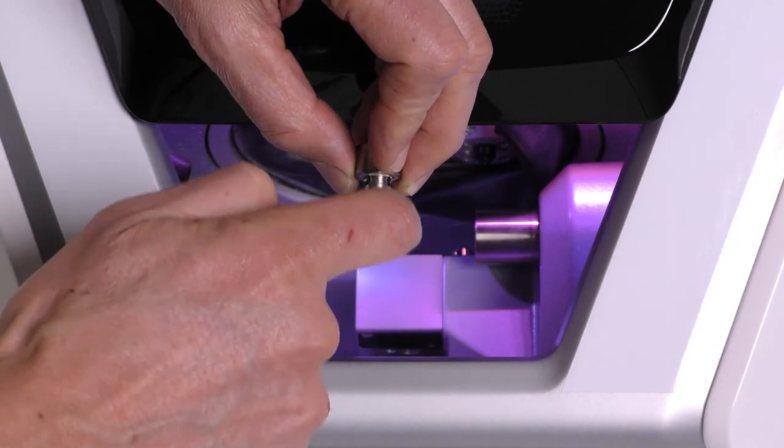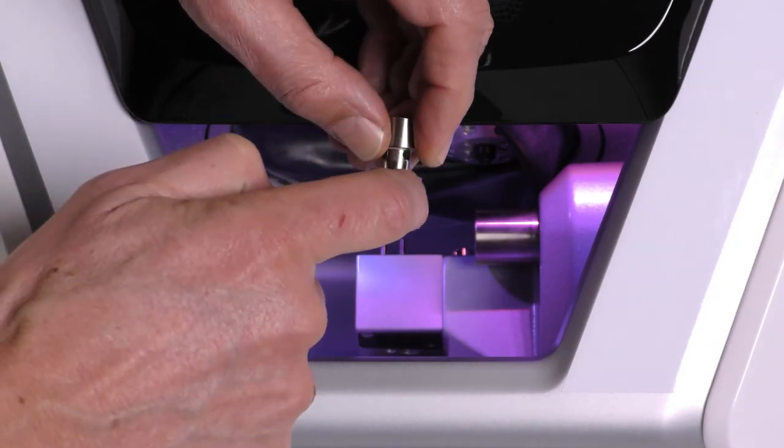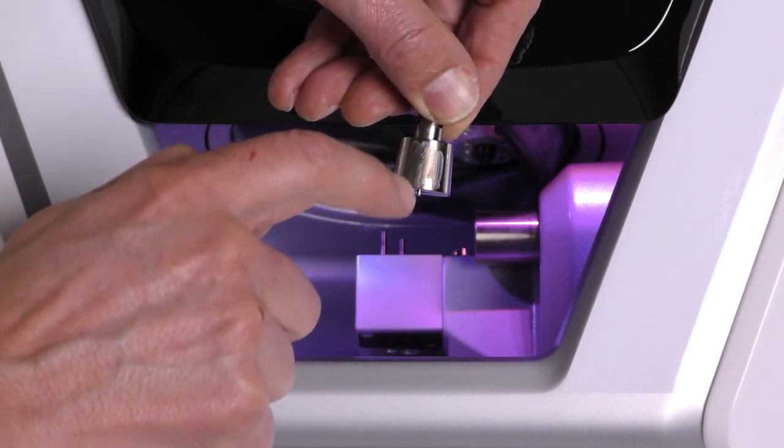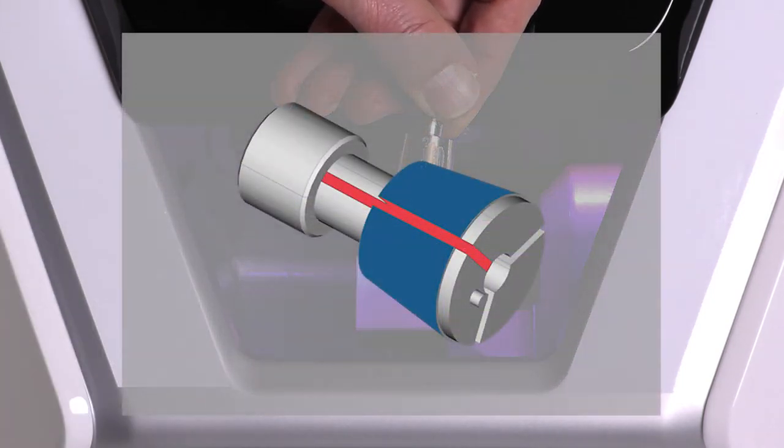Grease the collet chuck. Apply the grease only to the conical surface of the collet chuck. The surface on which grease is to be applied is marked blue. The longitudinal slot that may not be greased is marked red.